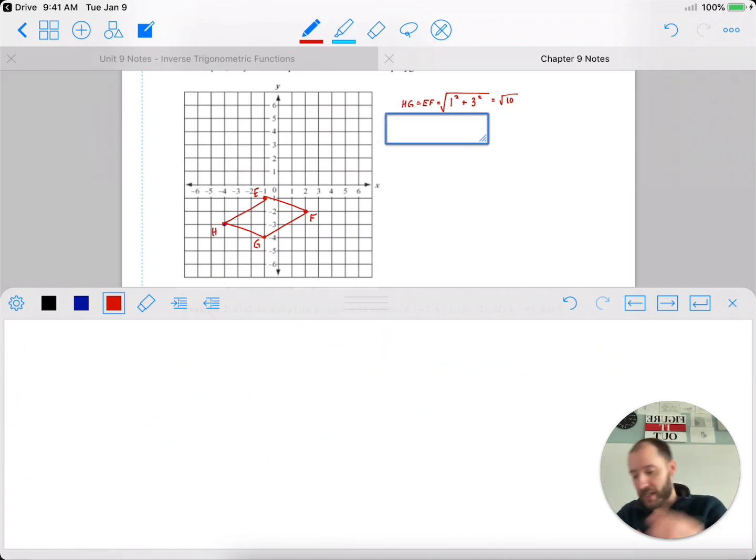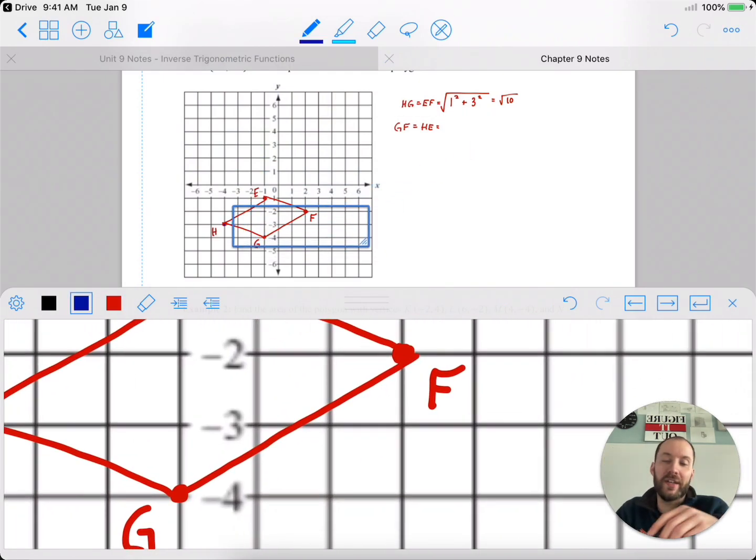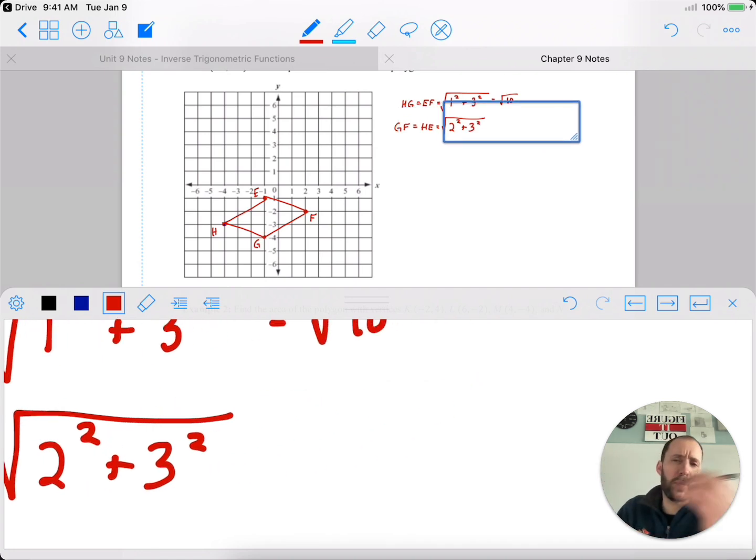Then the same idea, GF is equal to HE. And I'll do another Pythagorean theorem. Because when according to a grid, I don't need to do distance formula - that's more generic, more generalized, but in a grid, just draw a triangle. And that's our triangle, GF is the hypotenuse. The legs are 3 and 2. So square root of 2 squared plus 3 squared - 4 plus 9, giving me root 13.